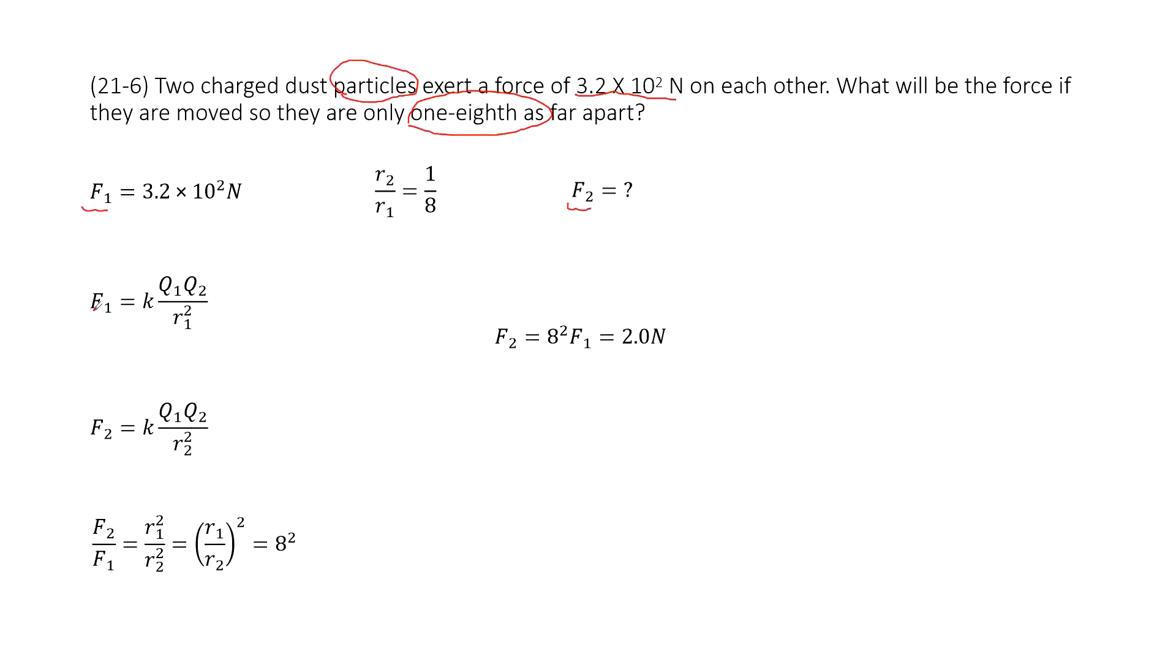So for the initial first case, F1 is k q1 q2 over r1 squared, and F2 is k q1 q2 over r2 squared. Both of these are Coulomb's law. Now we need to find F2.